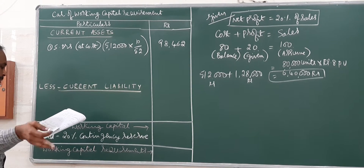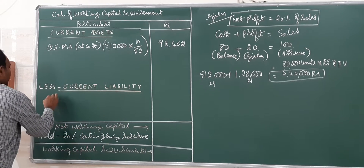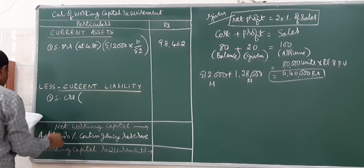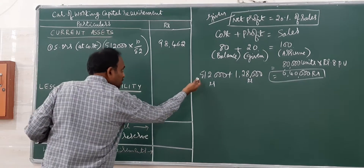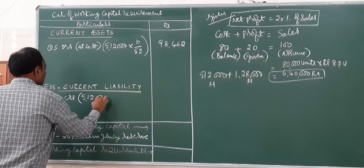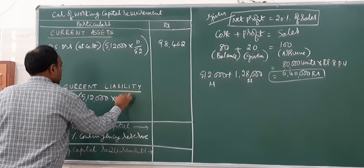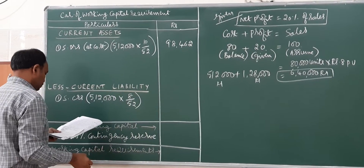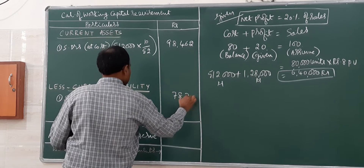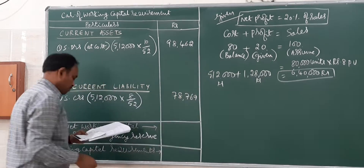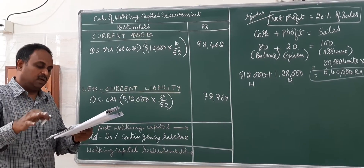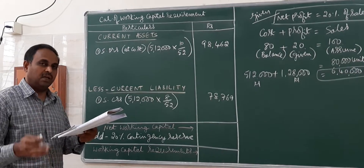Next, average credit period allowed by suppliers: eight weeks by suppliers of raw materials — sundry creditors. We assume the entire cost is raw material cost: five lakh twelve thousand multiplied by eight divided by fifty-two gives seventy-eight thousand seven hundred sixty-nine.